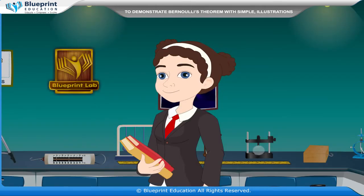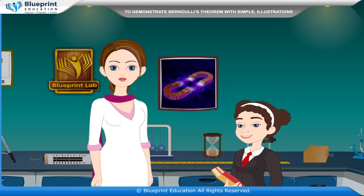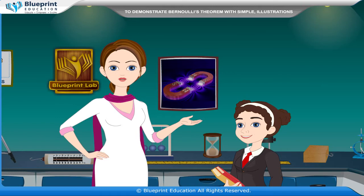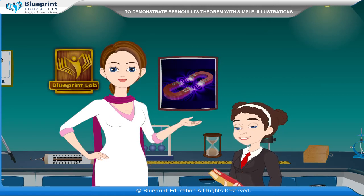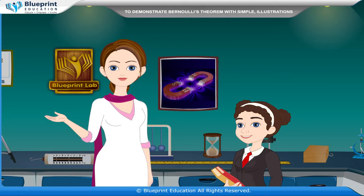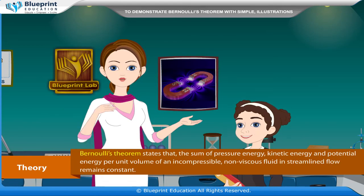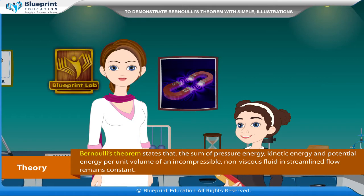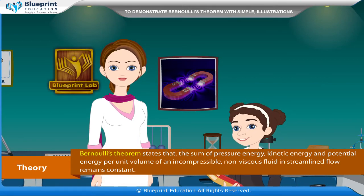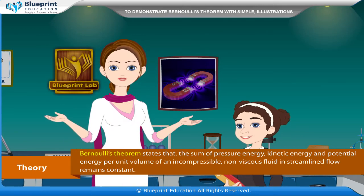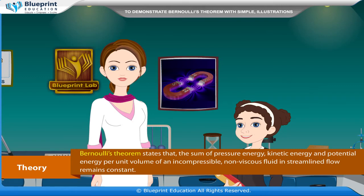What is Bernoulli's theorem? Bernoulli's theorem can be expressed with the Bernoulli's equation: p plus half rho v square plus rho g h is equal to constant. If a fluid is flowing in such a way that all its particles passing through a point follow the same path, then this flow is called streamlined flow. Bernoulli's theorem states that the sum of pressure energy, kinetic energy, and potential energy per unit volume of an incompressible non-viscous fluid in streamlined flow remains constant.